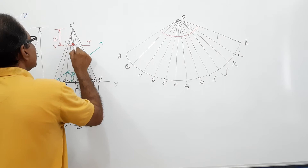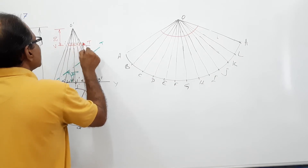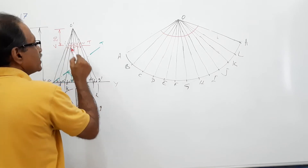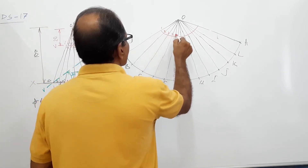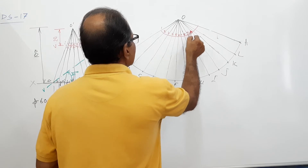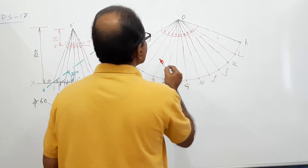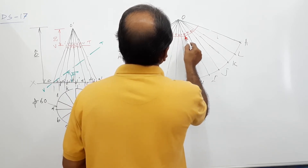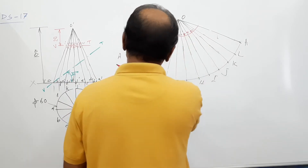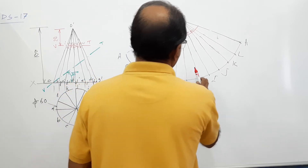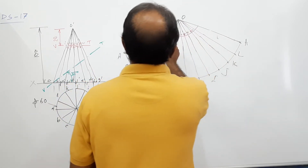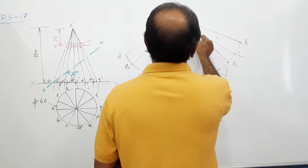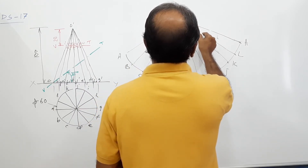Mark the generator lines: 1 dash, 2 dash, 3 dash, 4 dash, 5 dash, 6 dash, 7 dash, 8 dash, 9 dash, 10 dash, 11 dash, 12 dash. Number them 1 through 12 and back to 1 on the development.